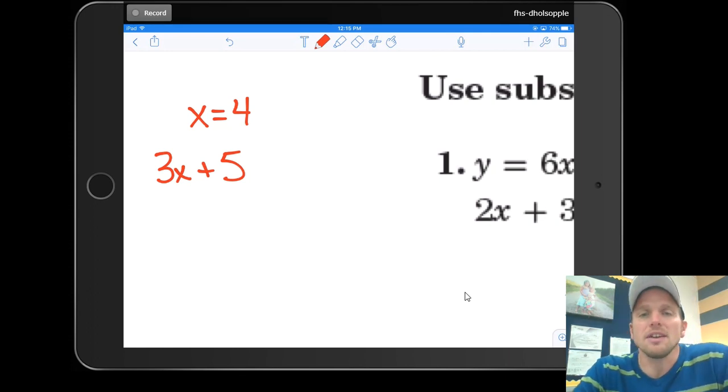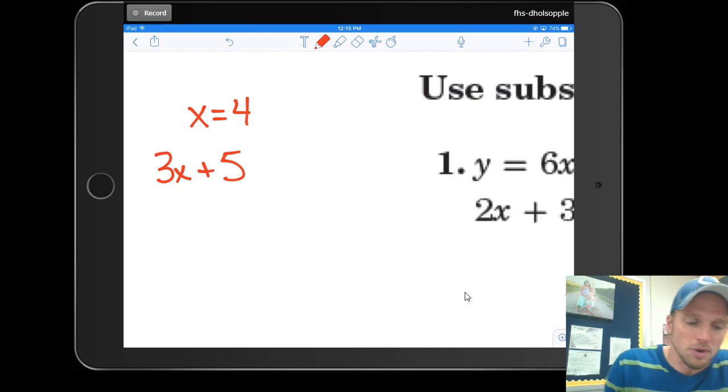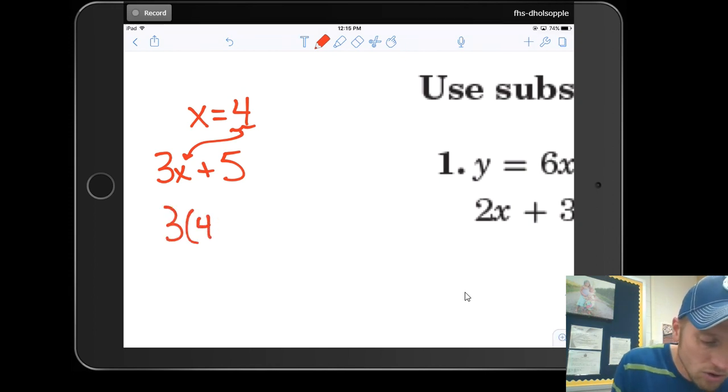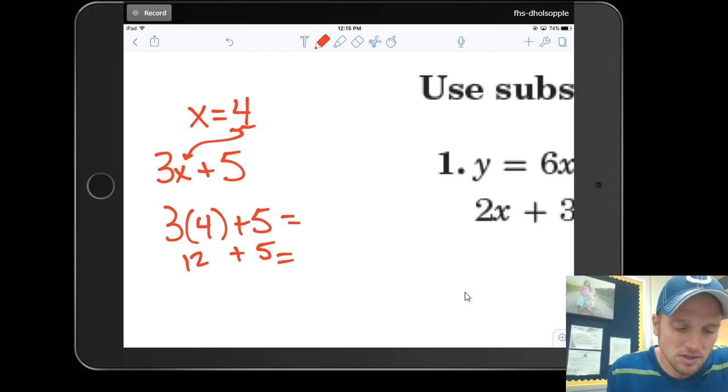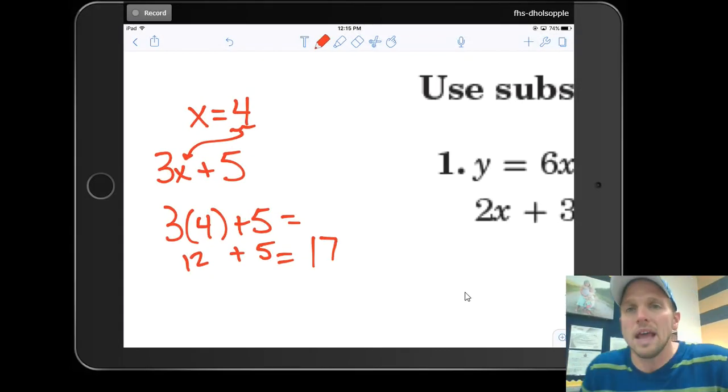You see down here, I tell you that x is equal to 4, and I want to know what 3x plus 5 is. Well, that's no problem, you just put 4 in for x, substitute that in. So you'd have 3 times 4 plus 5, and that's going to be 12 plus 5 is 17. We can do that, no problem, we don't even have to think about that.